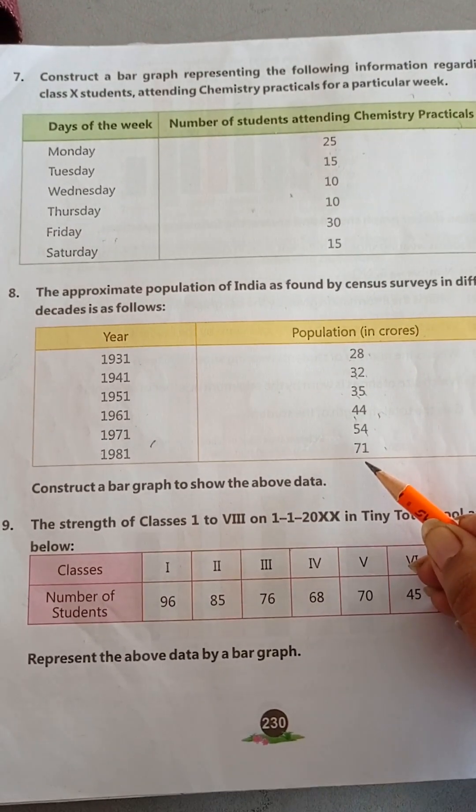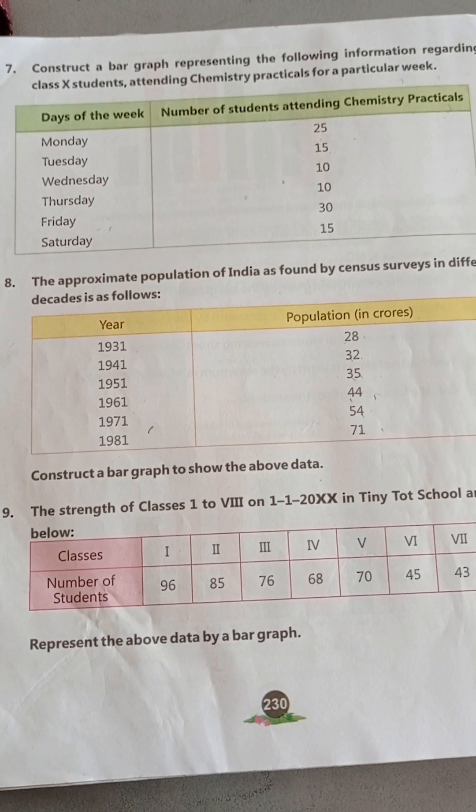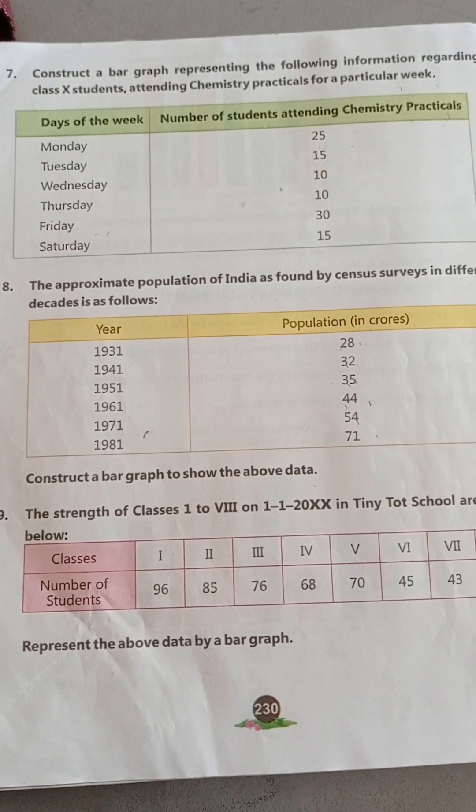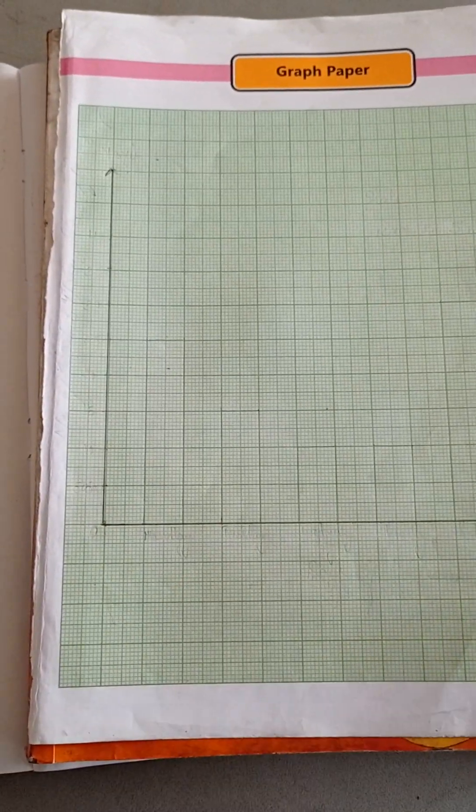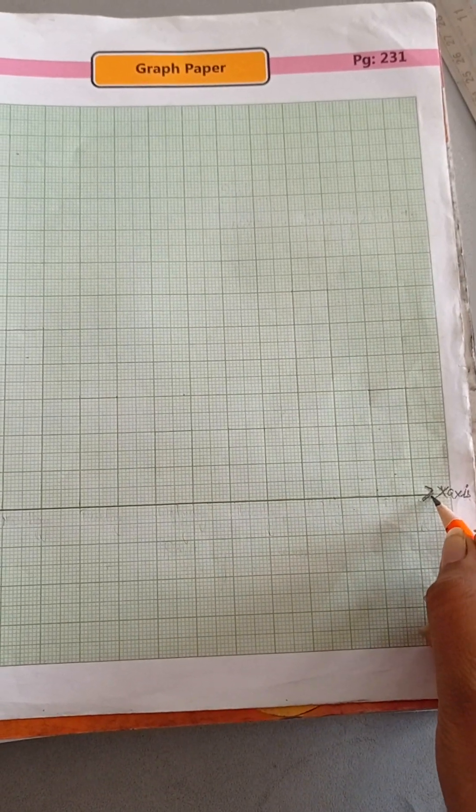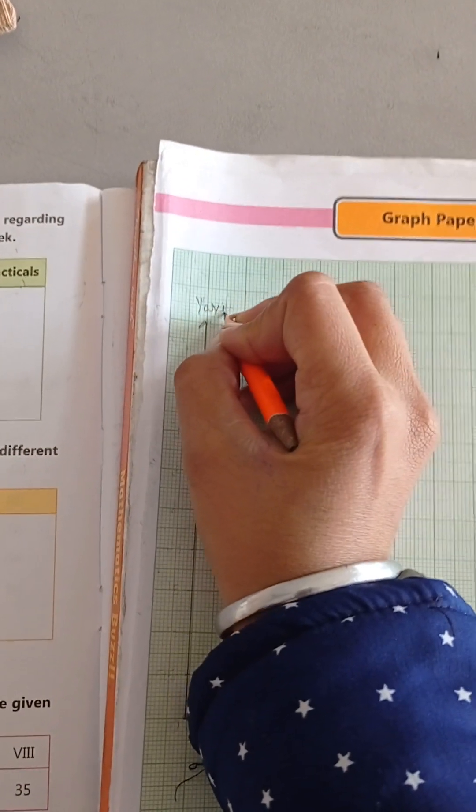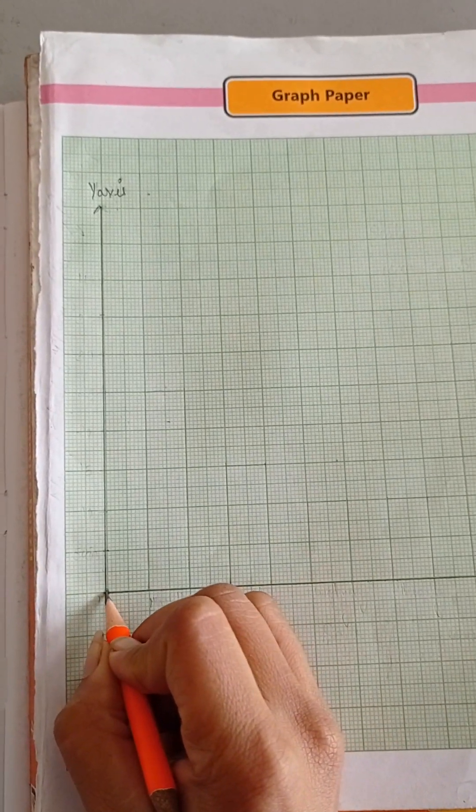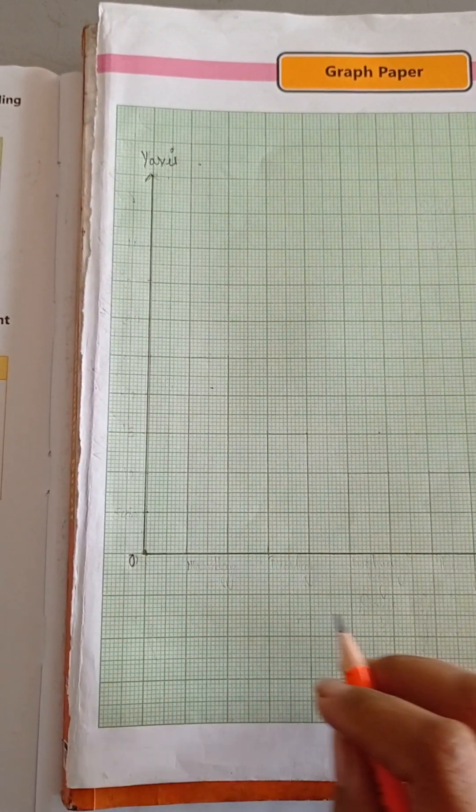You have to construct a bar graph to show the above data. In the same way as you had done question number 7, first of all, you take a graph paper or a graph notebook and draw two lines, vertical line and a horizontal line. Horizontal line is known as x-axis and vertical line is known as y-axis. As I explained earlier in the previous video, this point is known as origin.